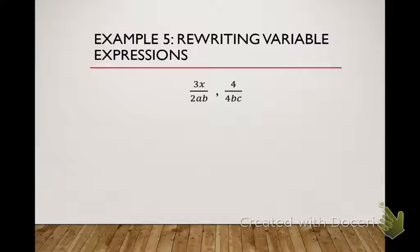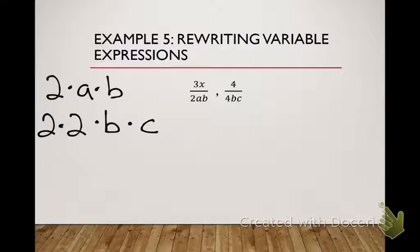3X over 2AB and 4 over 4BC. Okay, 2AB, that's already factored, over 2 times 2 times B times C. Okay, so I factored out my denominators. I had a 2 and I had a B in common.